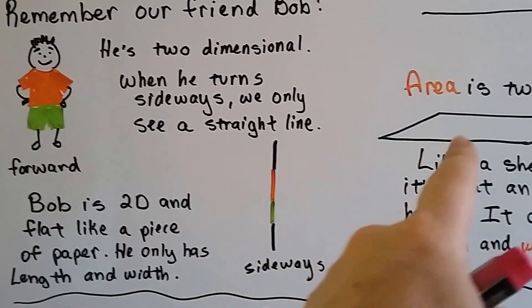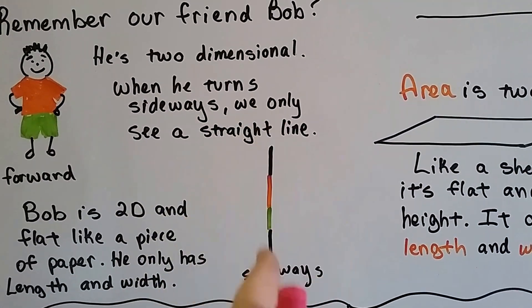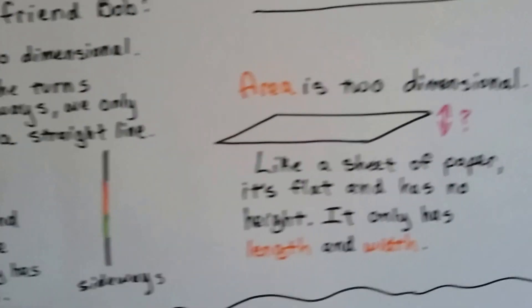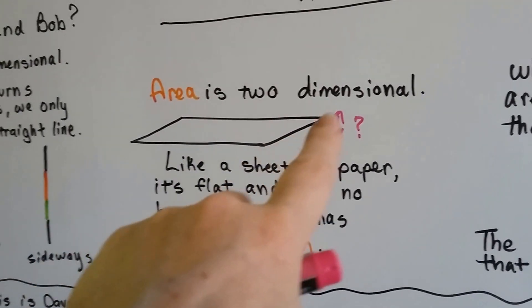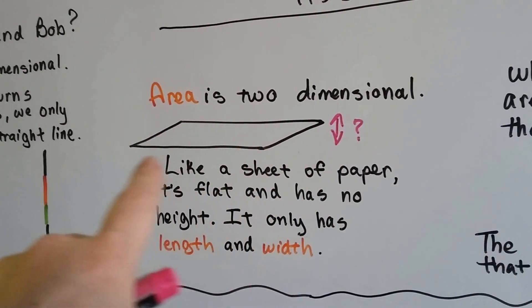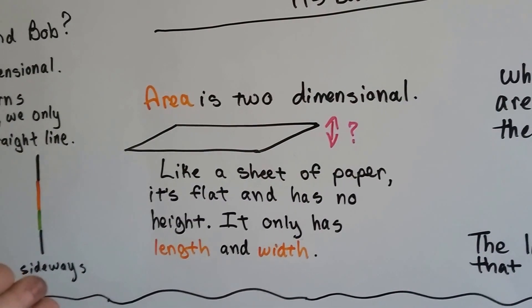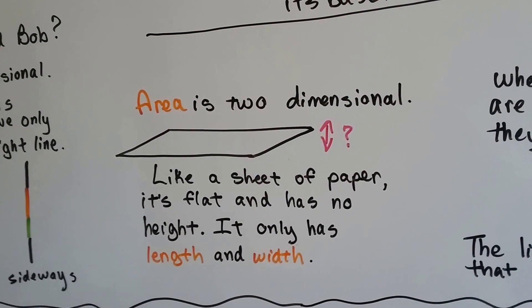And when he turns sideways, like a sheet of paper, he's just a thin line. So the area is two-dimensional. It's just this measure multiplied by that measure. It's like a sheet of paper. It's flat. It has no height. It only has length and width.